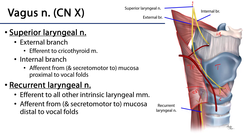The superior laryngeal nerve is a branch of the vagus nerve, cranial nerve 10. It ramifies into the internal branch, which goes through this hiatus to innervate the mucosa superior to the vocal folds. That has two functions: one, it will be afferent from those mucosa, and two, it will be secretomotor to the glands of those mucosa — everything above the vocal folds.